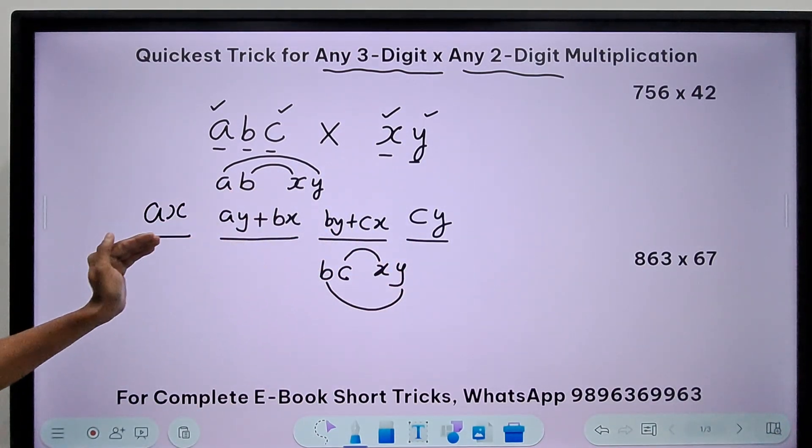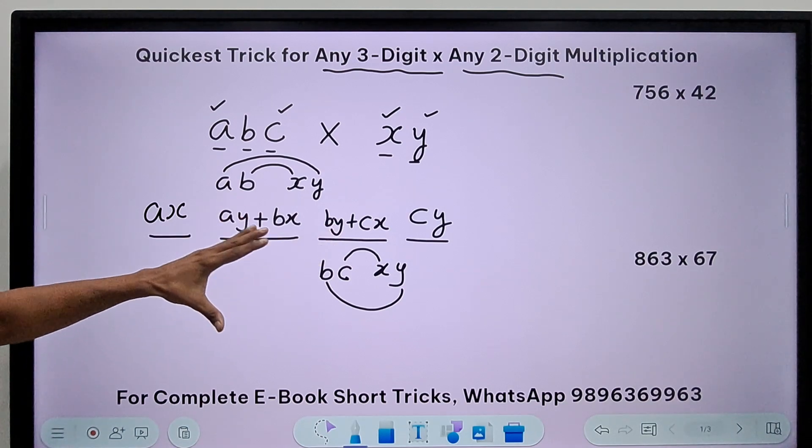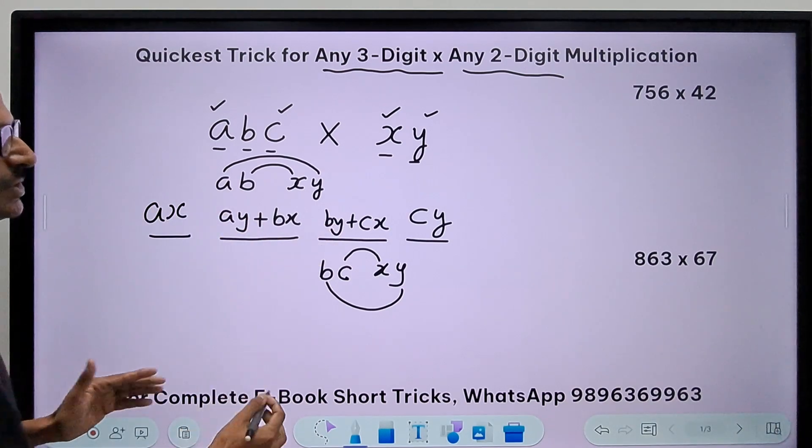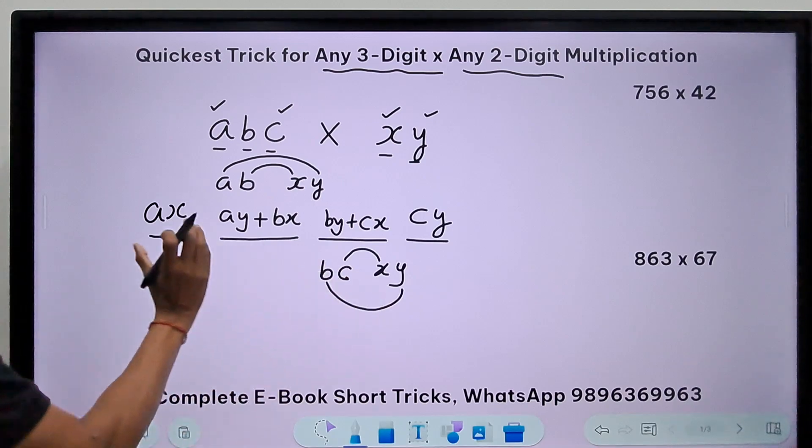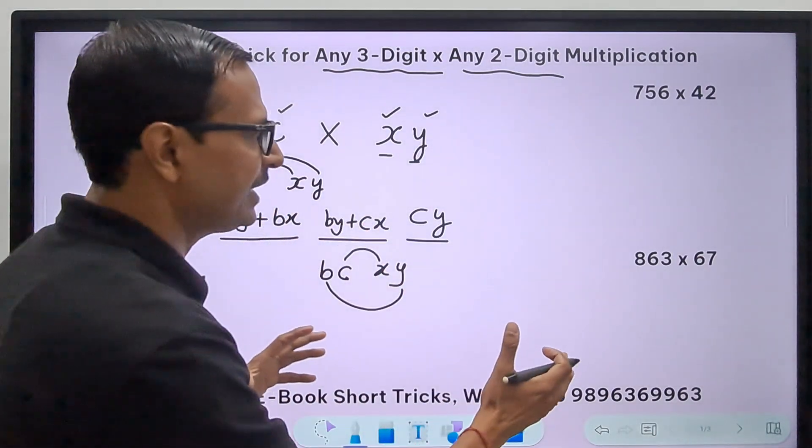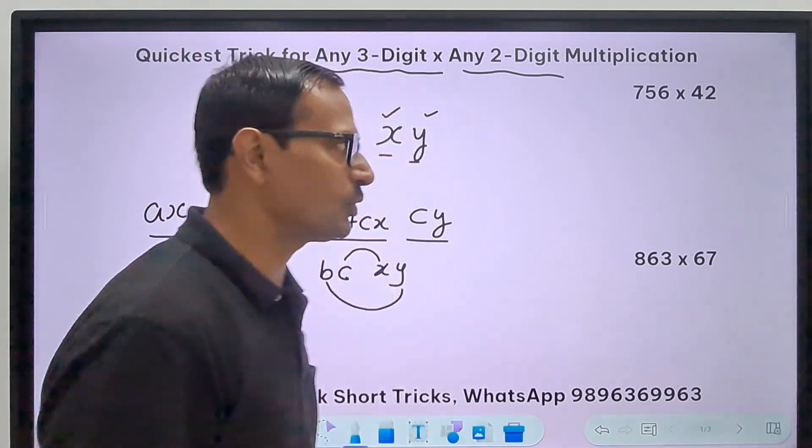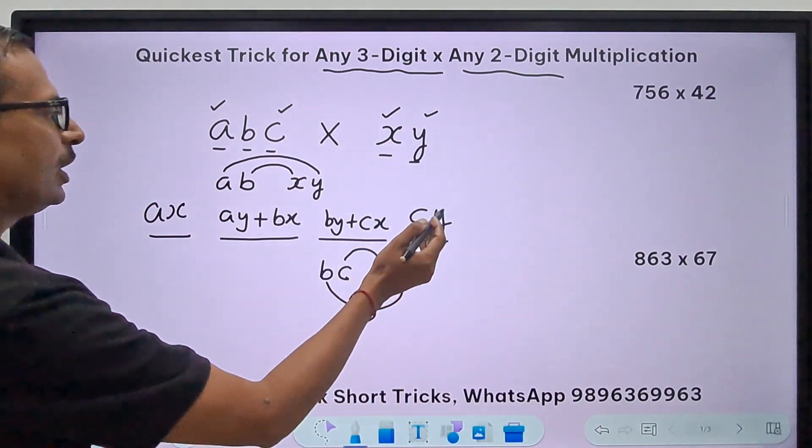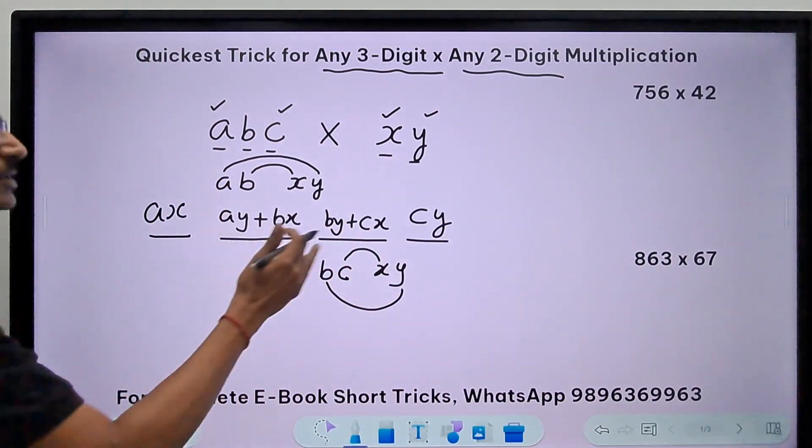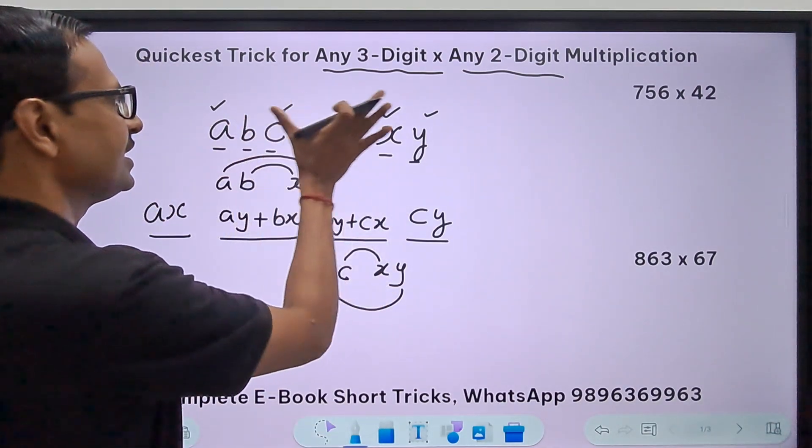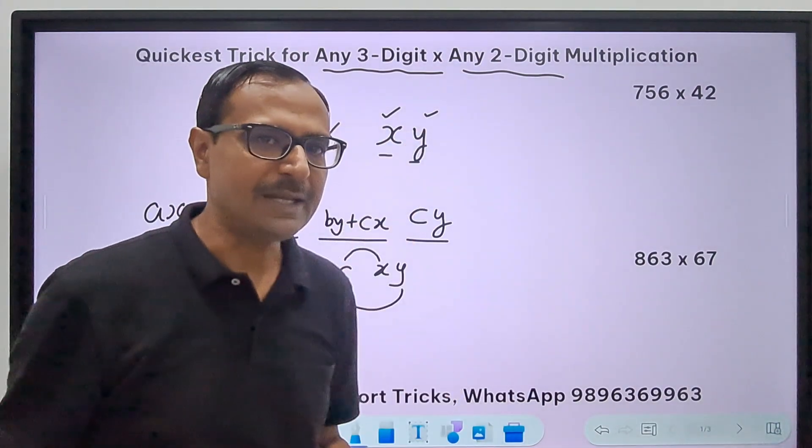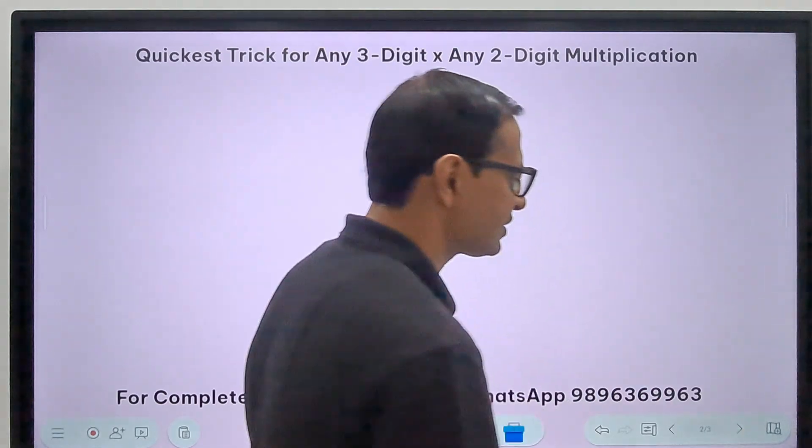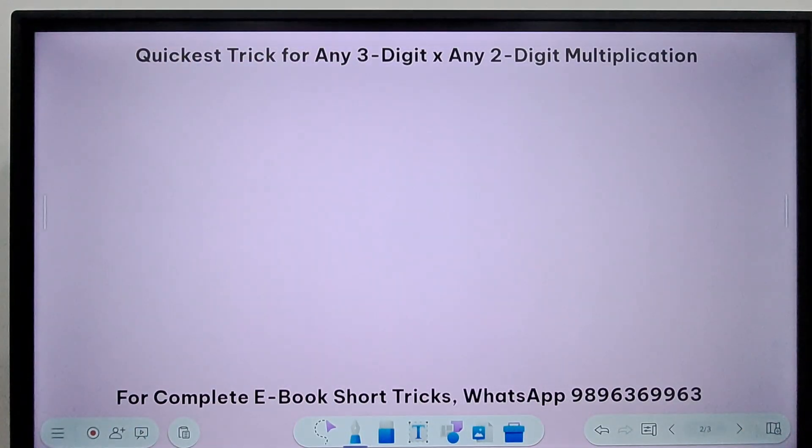This will decide whether your final answer will be correct or not. In my next slide I'm going to take up some numbers and demonstrate this to you, and I will also show you how after getting these four numbers you can find the product directly. Let's take up some examples.